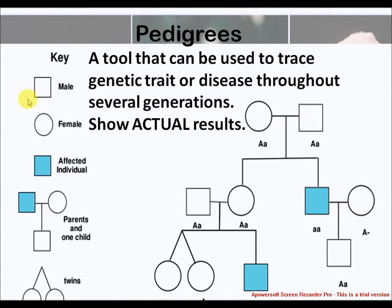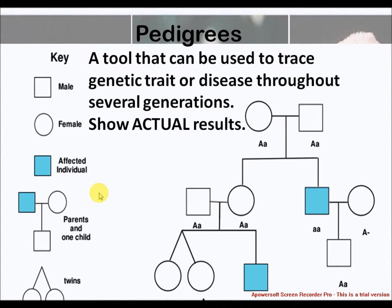The key includes: a male, a female, an affected individual, parents and one child, and twins — shown as an example of female, female in a pedigree.